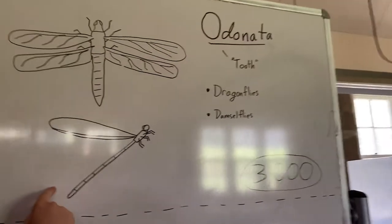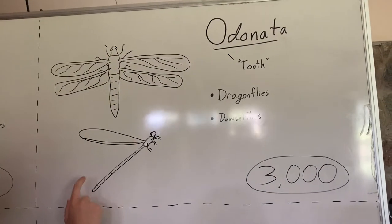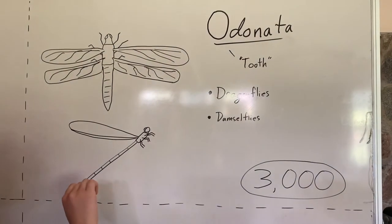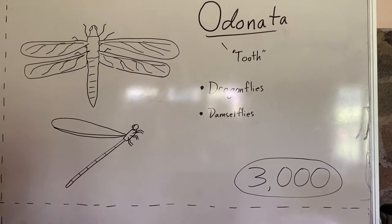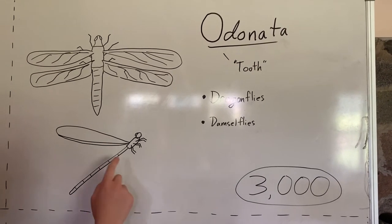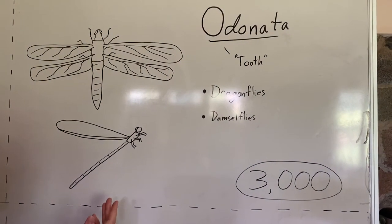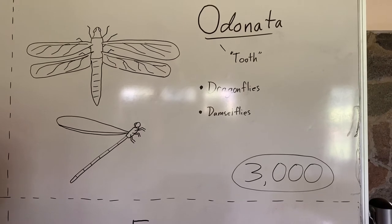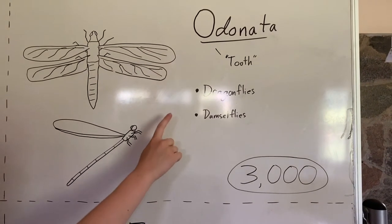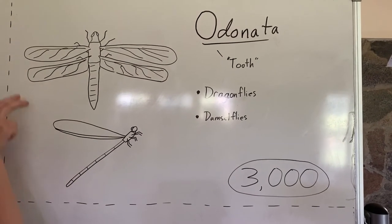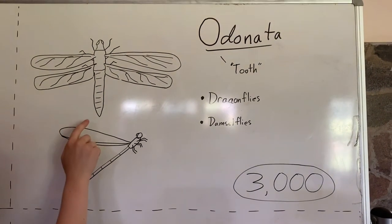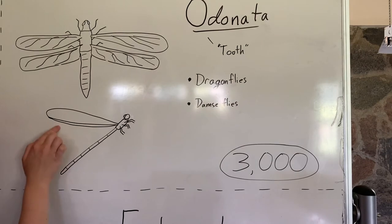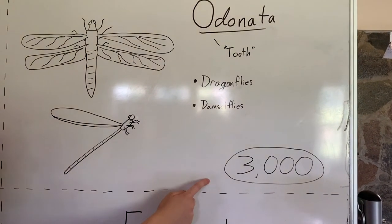The next is Odonata, which is an exception to the naming rules — most orders have some descriptive term with 'ptera' meaning wing, but Odonata just means tooth, which is somewhat misleading. They have chewing mouthparts and very large ones because they eat many other insects, going after just about anything they can catch while flying. This group includes the dragonflies and damselflies. They have two pairs of membranous wings. Dragonflies tend to have shorter, thicker bodies and hold their wings flat, whereas damselflies have very long, slender abdomens and hold their wings upward along their back. There are only about 3,000 species worldwide.